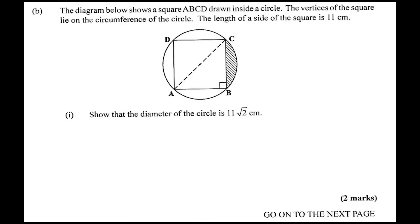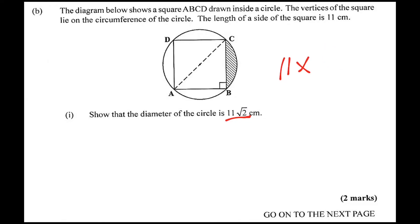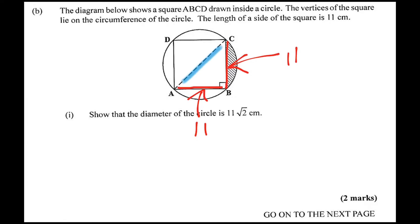The diagram below shows a square ABCD drawn with its vertices lying on the circumference of a circle — that just means they're touching the circle. The length of one side is eleven centimeters. You need to show that the diameter of the circle is eleven root two, meaning eleven times the square root of two. So both sides of the square are eleven. You need to find the diagonal using Pythagoras: C squared equals A squared plus B squared.